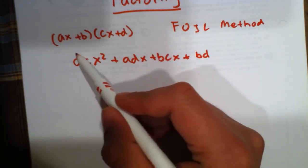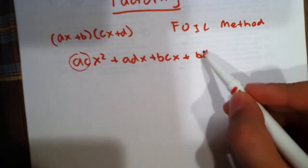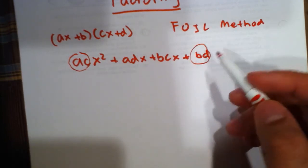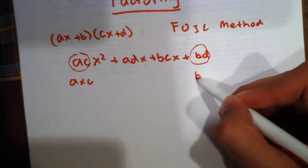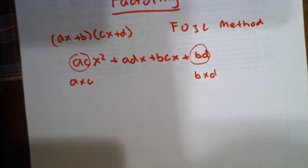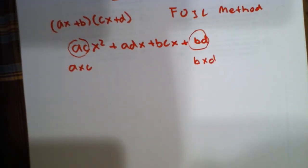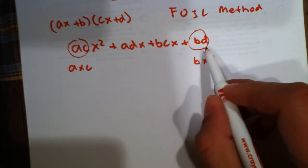Now, if we look at this coefficient in front of x squared and this last term here, it is clear that this is a times c and this is b times d. This is important because the method I will be introducing will involve us making a cross and we will factor just these constants.